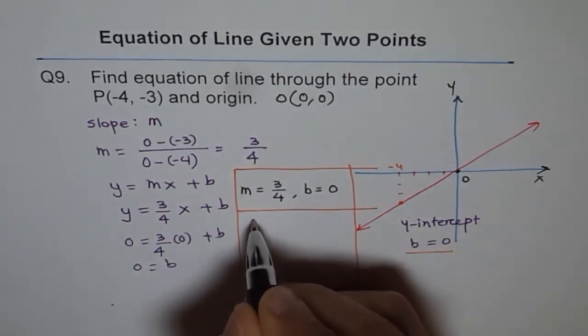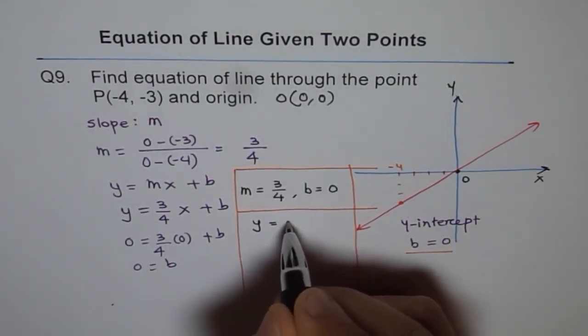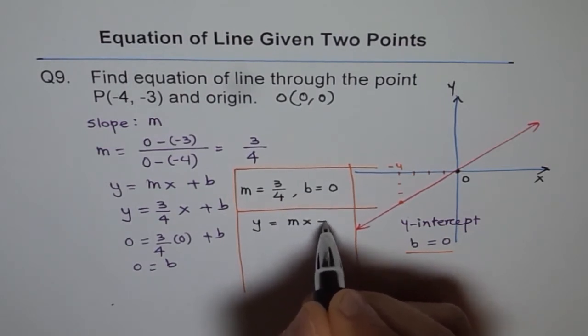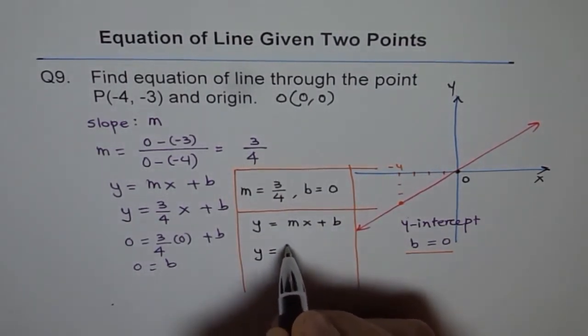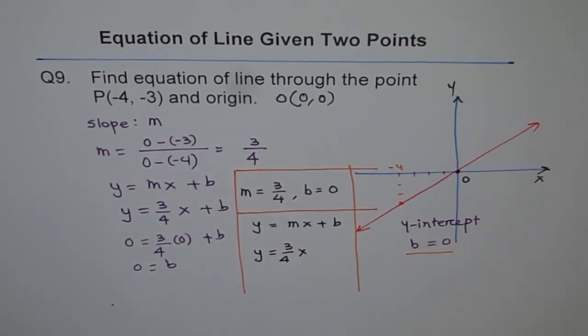So now we know that slope M is equal to 3 over 4 and Y-intercept B is equal to 0. And therefore, our equation Y equals MX plus B can be written as Y equals 3 over 4X plus 0. So no need to write that.